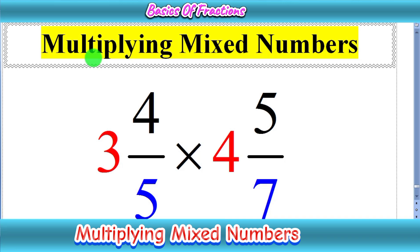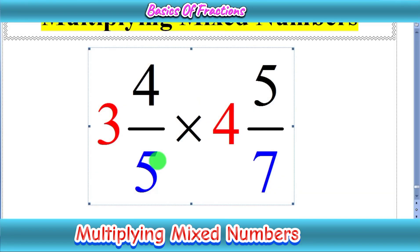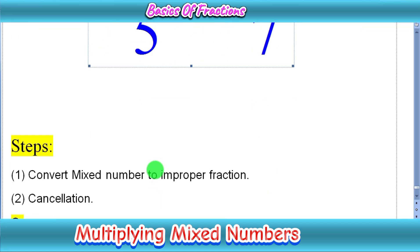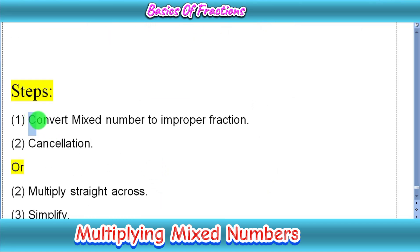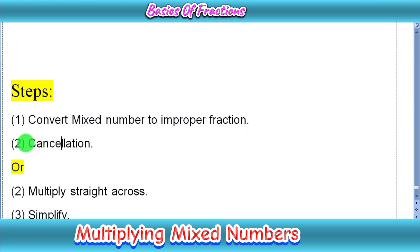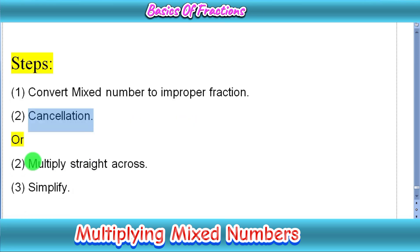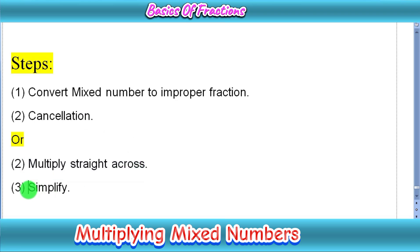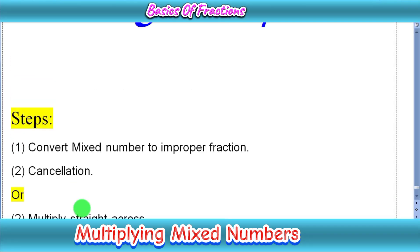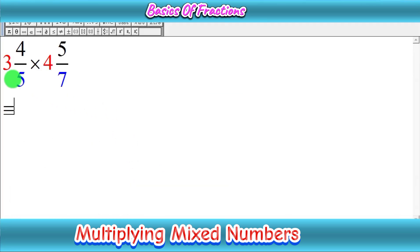Today we are going to discuss how to multiply a mixed number with a mixed number. Our example is 3 whole 4 upon 5 times 4 whole 5 upon 7. Before multiplication, let's recall the procedure steps. In the first step, we convert all mixed numbers into improper fractions. In the second step, we cancel out common factors or multiply straight across. In the last step, we simplify and convert back into a mixed number if needed.